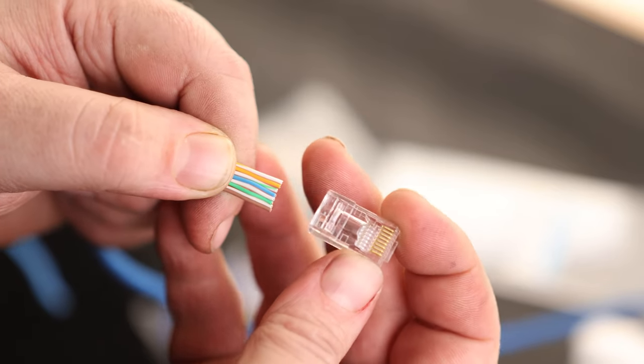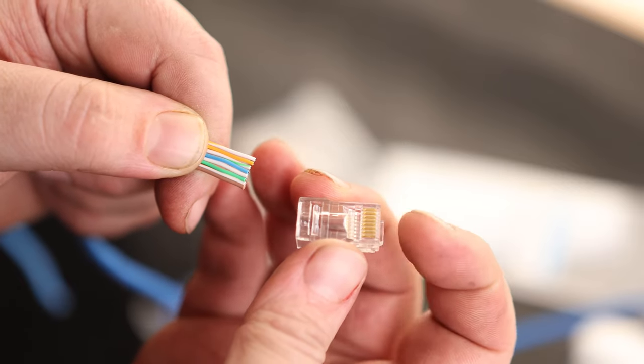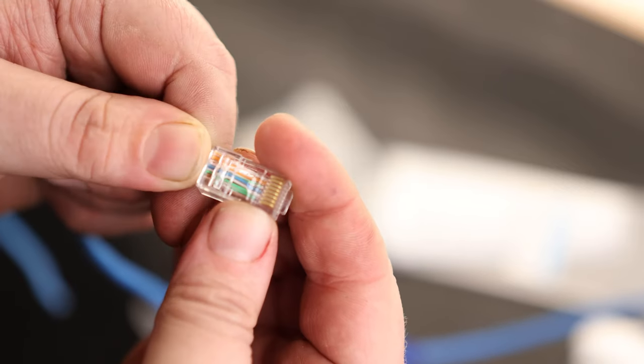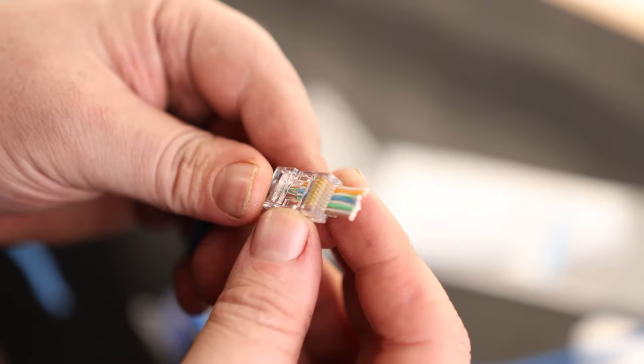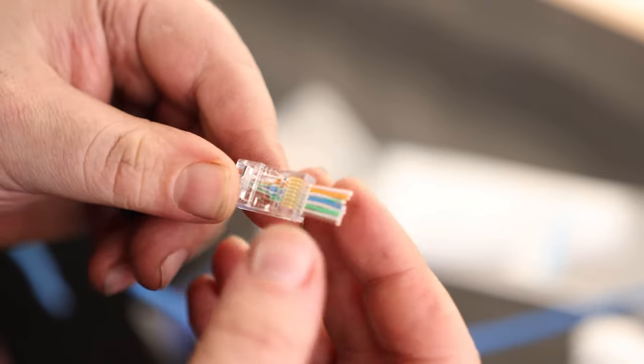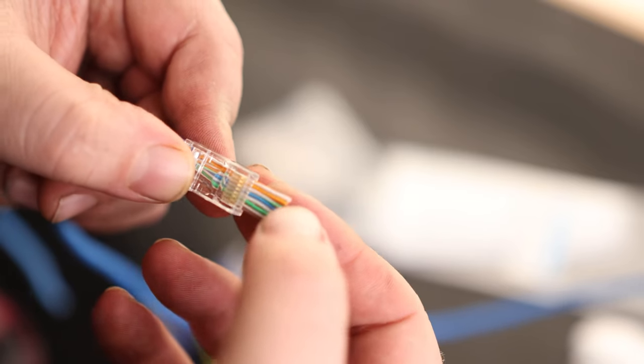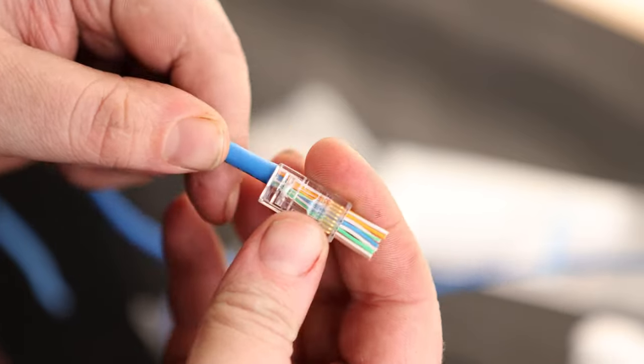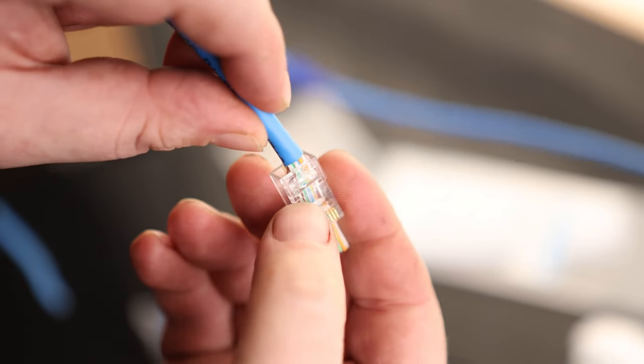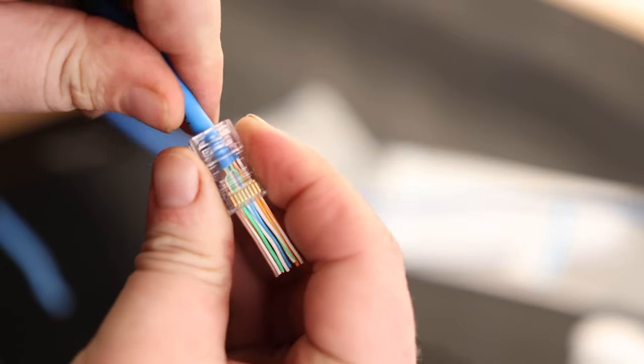And then we're going to put our connector on. So the orange-white is on the left side with the clip facing down. So we can see the contacts on top. And as we're feeding that in, we can see that this is a pass-through cable. So we can just check these and make sure that they're all lined up correctly. Orange-white-orange, green-white-blue, blue-white-green, brown-white-brown. So we are still good. And then we want the insulation to go underneath this pinch point right here. Just like that.